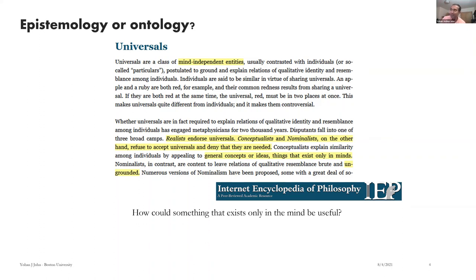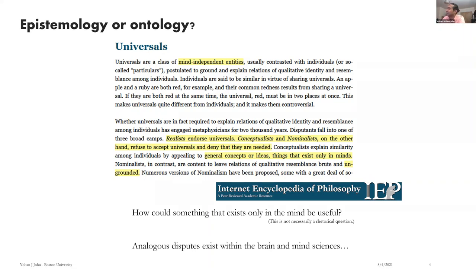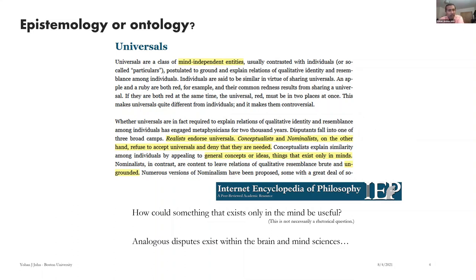How could something that exists only in the mind be useful in the first place? Analogous disputes — nominalists versus realists — exist within the brain and mind sciences outside the ontological question. All these critiques of representation and symbol are a version, a manifestation of the same issue. Because a nominalist perspective on internal structures in the brain is more like highly context-dependent, bolted to what's real and what's particular — particular behaviors in particular contexts.